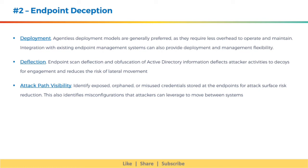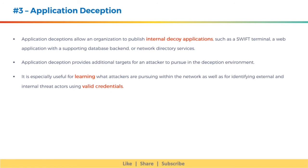The next type is application deception. Application deceptions allow an organization to publish internal decoy applications, such as a SWIFT terminal, a web application with a supporting database backend, or network directory services. Application deception provides additional targets for an attacker to pursue in the deception environment, and is especially useful for learning what attackers are pursuing within the network, as well as for identifying external and internal threat actors using valid credentials.